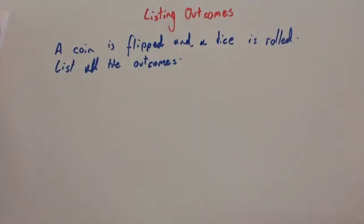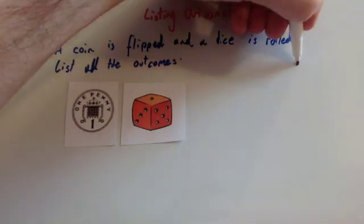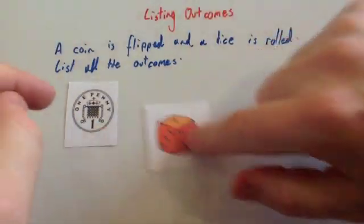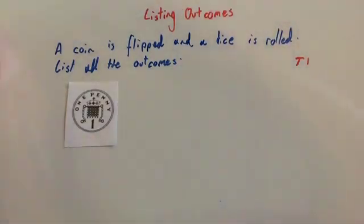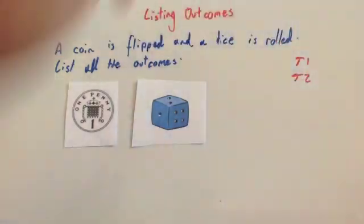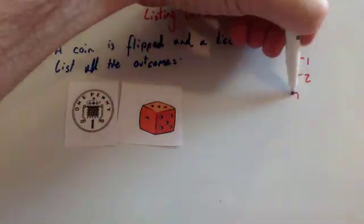So, first of all, you've got a coin that's flipped. So you could get a tail and a one. So let's write that down. We could get a tail and a one. I'm just going to write T1. We could get a tail and a two. So tail two. We could get a tail and a three. So tail three.